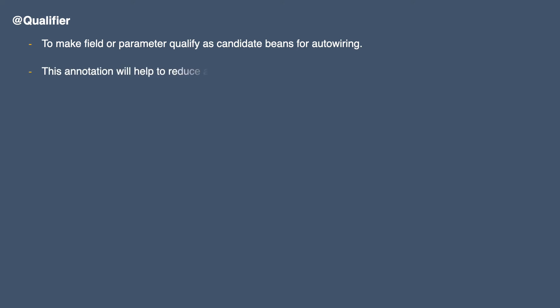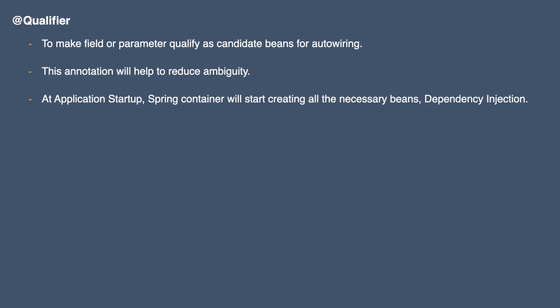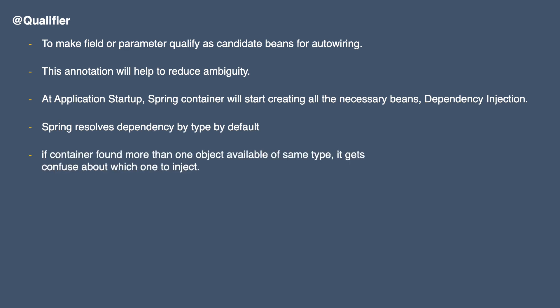The use of this annotation is to make a field or parameter qualify as a candidate bean for Autowire. This annotation helps reduce ambiguity. When the Spring container scans our project at application startup, it starts creating all the necessary beans and performs dependency injection. The container looks for all dependent beans and objects, and Spring resolves dependencies by type by default. But if the container finds more than one object available for the same type, it gets confused about which one to inject.